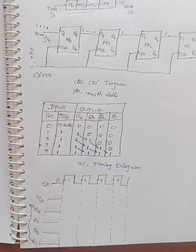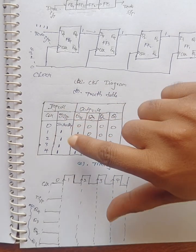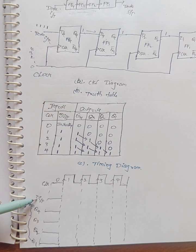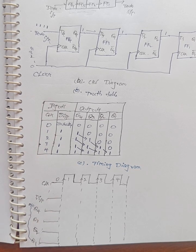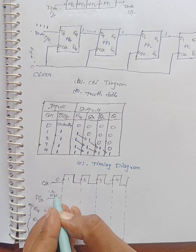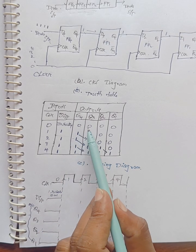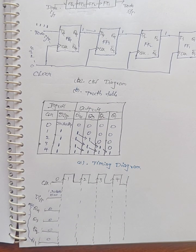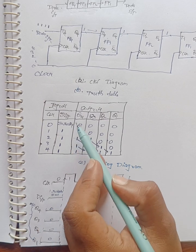Let us see the timing diagram of the 4-bit shift right register. The timing diagram shows the waveform relation between input and output values. Clock is the default input. Initially, clock equals zero, and data input is initially zero or one. All four outputs — Q4, Q3, Q2, Q1 — are zero, shown as a flat line.